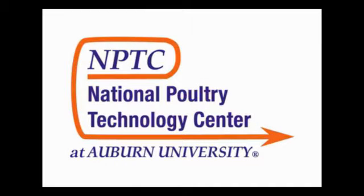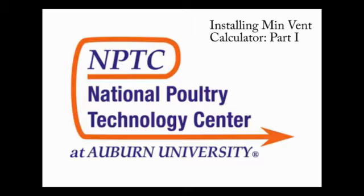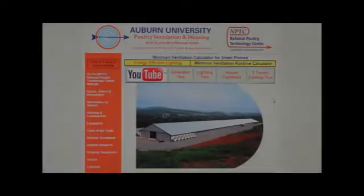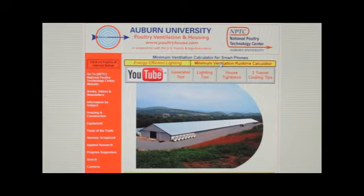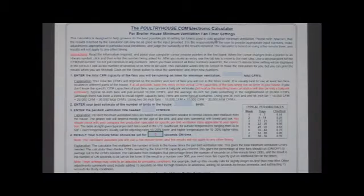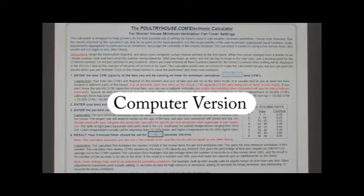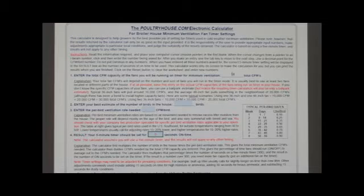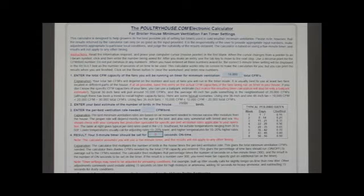Welcome to the National Poultry Technology Center's video for installing our new minimum ventilation runtime calculator on an iPhone. For over 10 years now on our website poultryhouse.com, we have had a minimum ventilation calculator available that can be downloaded for use on a computer. This calculator has helped many growers and servicemen figure minimum ventilation runtime cycles to help start cold weather flocks off successfully.